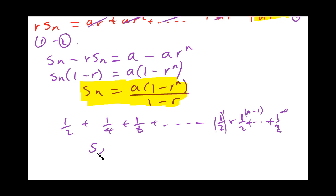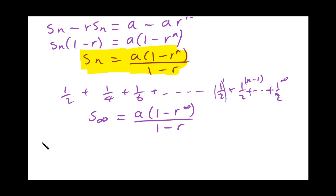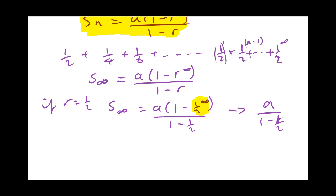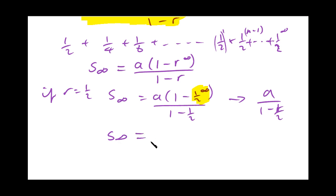Our sum to infinity, using our formula, equals A times (1 minus R to the infinity) all over (1 minus R). In this case, with R equal to a half, we get A times (1 minus (1/2) to the infinity) all over (1 minus 1/2). Since (1/2) to the infinity tends toward 0, this term becomes insignificant, so the sum to infinity tends toward A over (1 minus R). This only works when R decreases the term — that is, when minus 1 is less than R and R is less than 1, i.e. the modulus of R is less than 1.